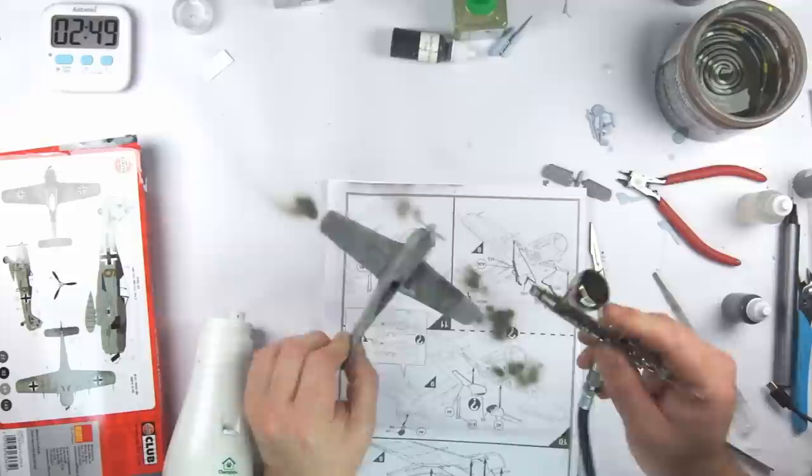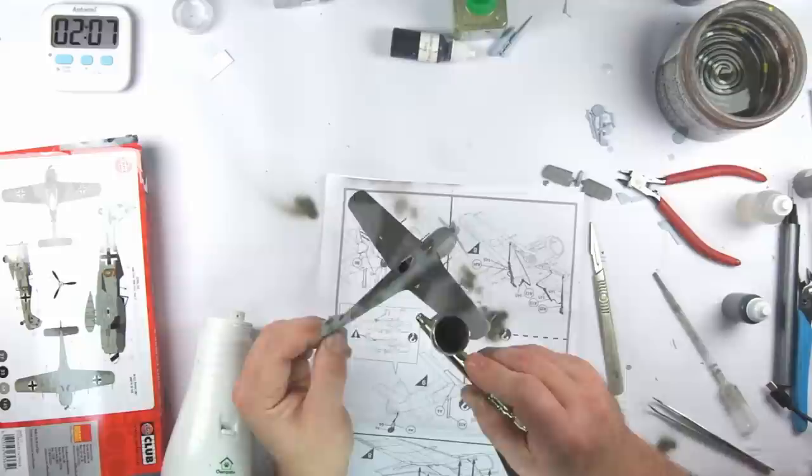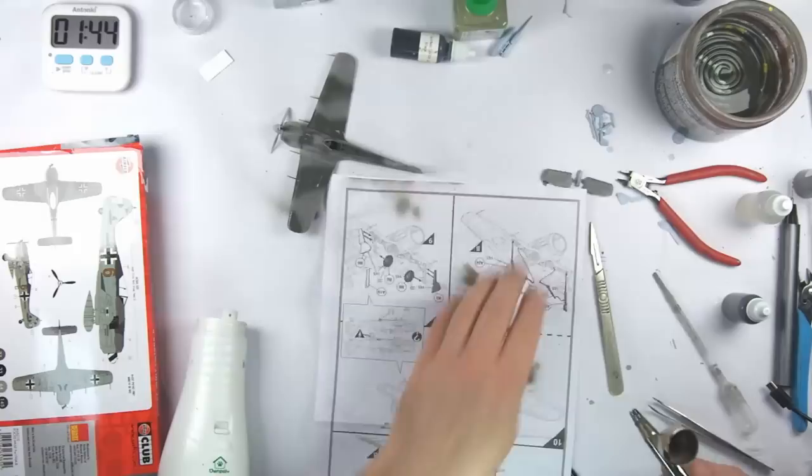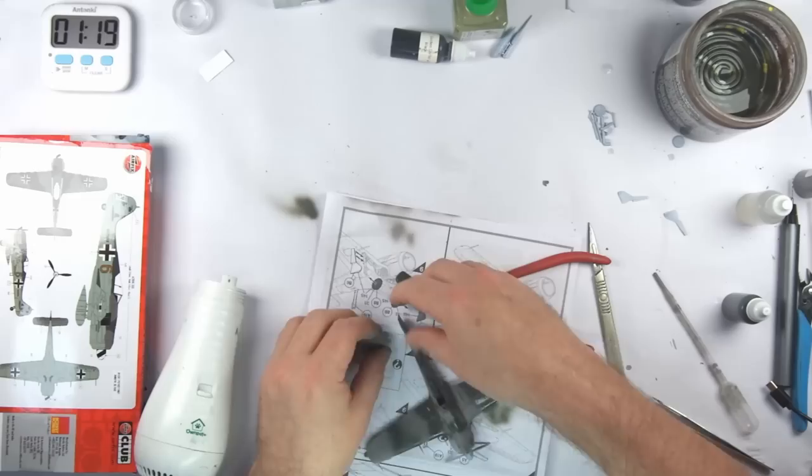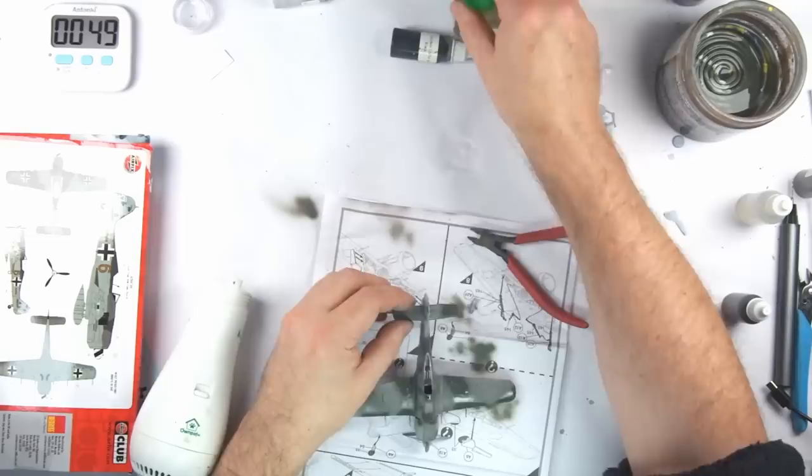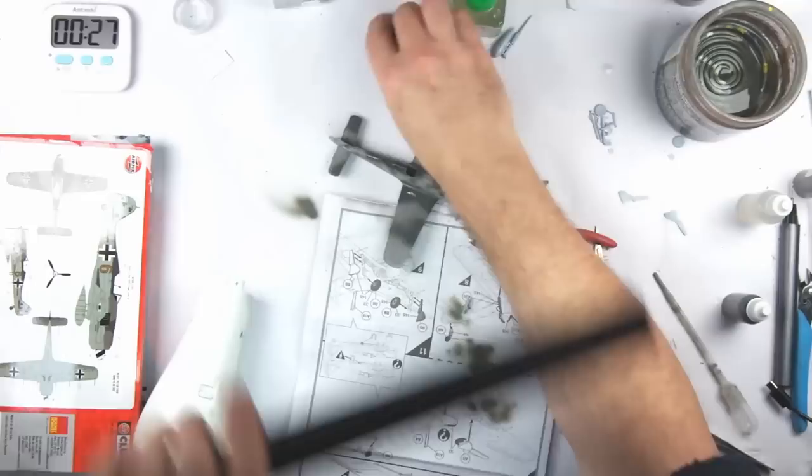With RLM 74 in the airbrush, I freehanded the camouflage on the aircraft, leaving me just a minute to attach the horizontal stabilizers. In the last 30 seconds, I hurriedly managed to hand paint the spinner with matte black and I was out of time.